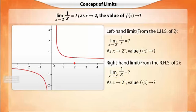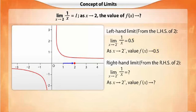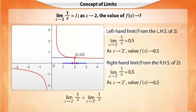Let us now analyze the left-hand limit. As we move towards 2 from the left, we can see that the height of the graph approaches the value 0.5. Hence, the left-hand limit is 0.5. Similarly, on moving towards 2 from the right, we can see that the height of the graph approaches 0.5, thereby giving us the right-hand limit as 0.5. We can see that the left-hand limit and right-hand limit take the same value. This equal value gives us the limit of the function as X approaches 2.